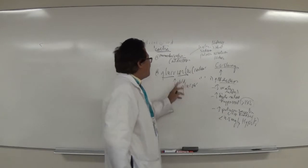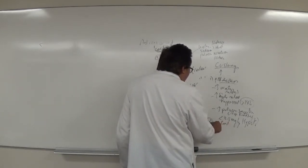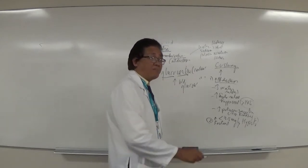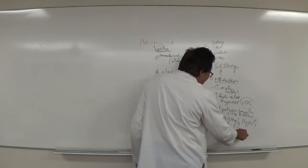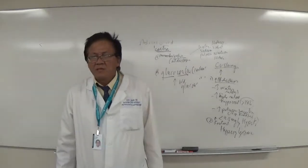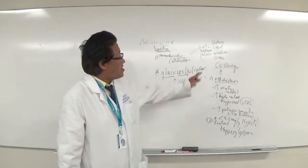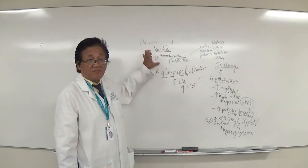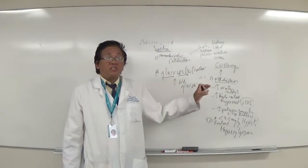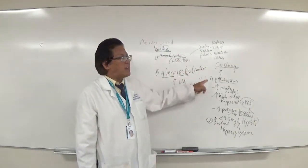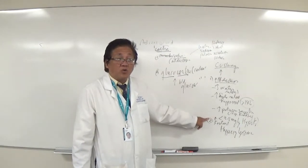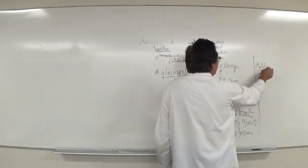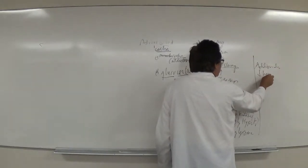In Addison's disease, decreased aldosterone leads to polyuria, water loss, hypovolemia, and low blood pressure. Sodium levels drop (hyponatremia: Na+ < 135 mEq/L), and potassium rises (hyperkalemia: K+ > 5 mEq/L). Blood glucose is low (hypoglycemia). Cushing's has high blood pressure from hypervolemia; Addison's has low blood pressure from hypovolemia.